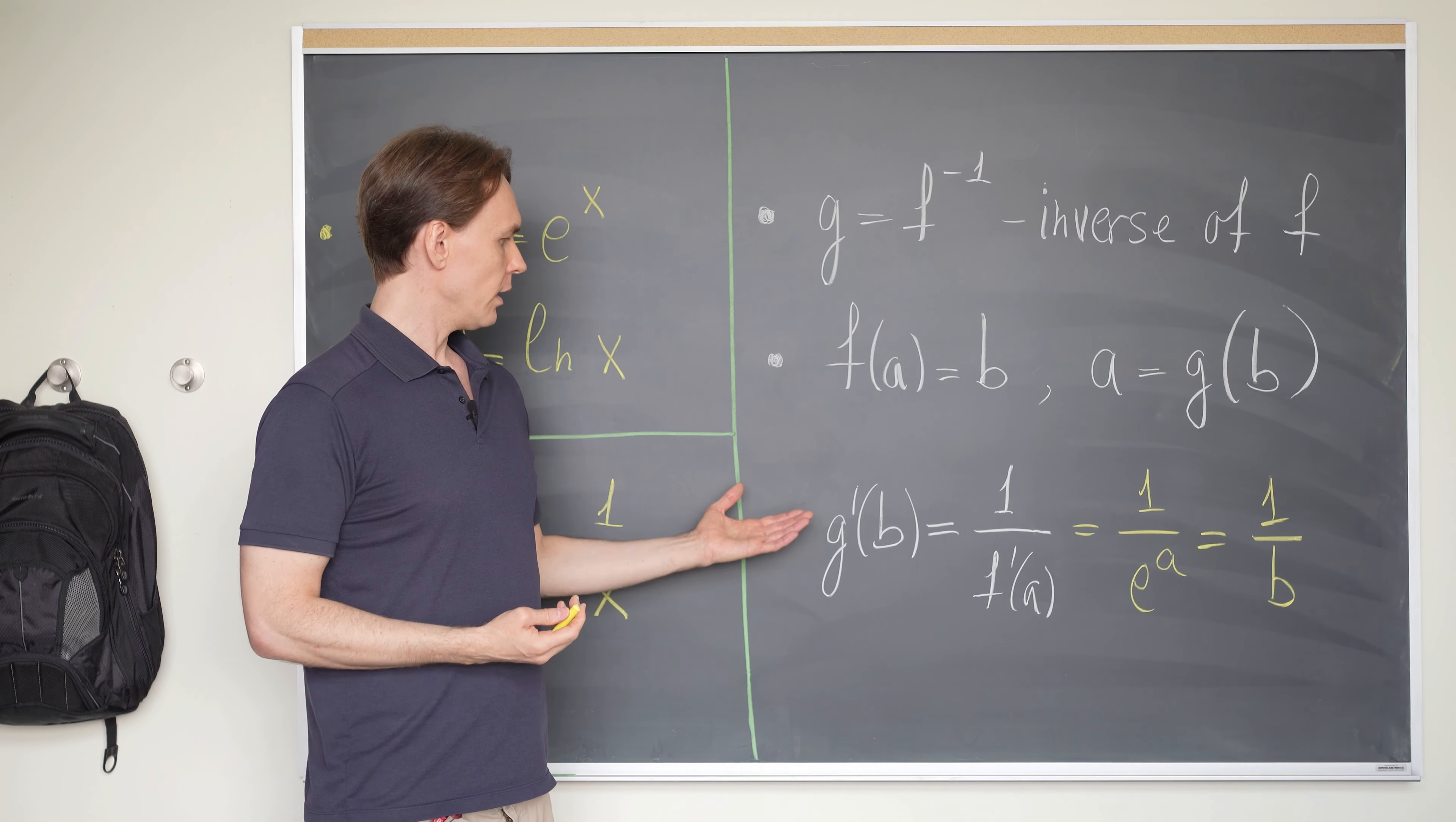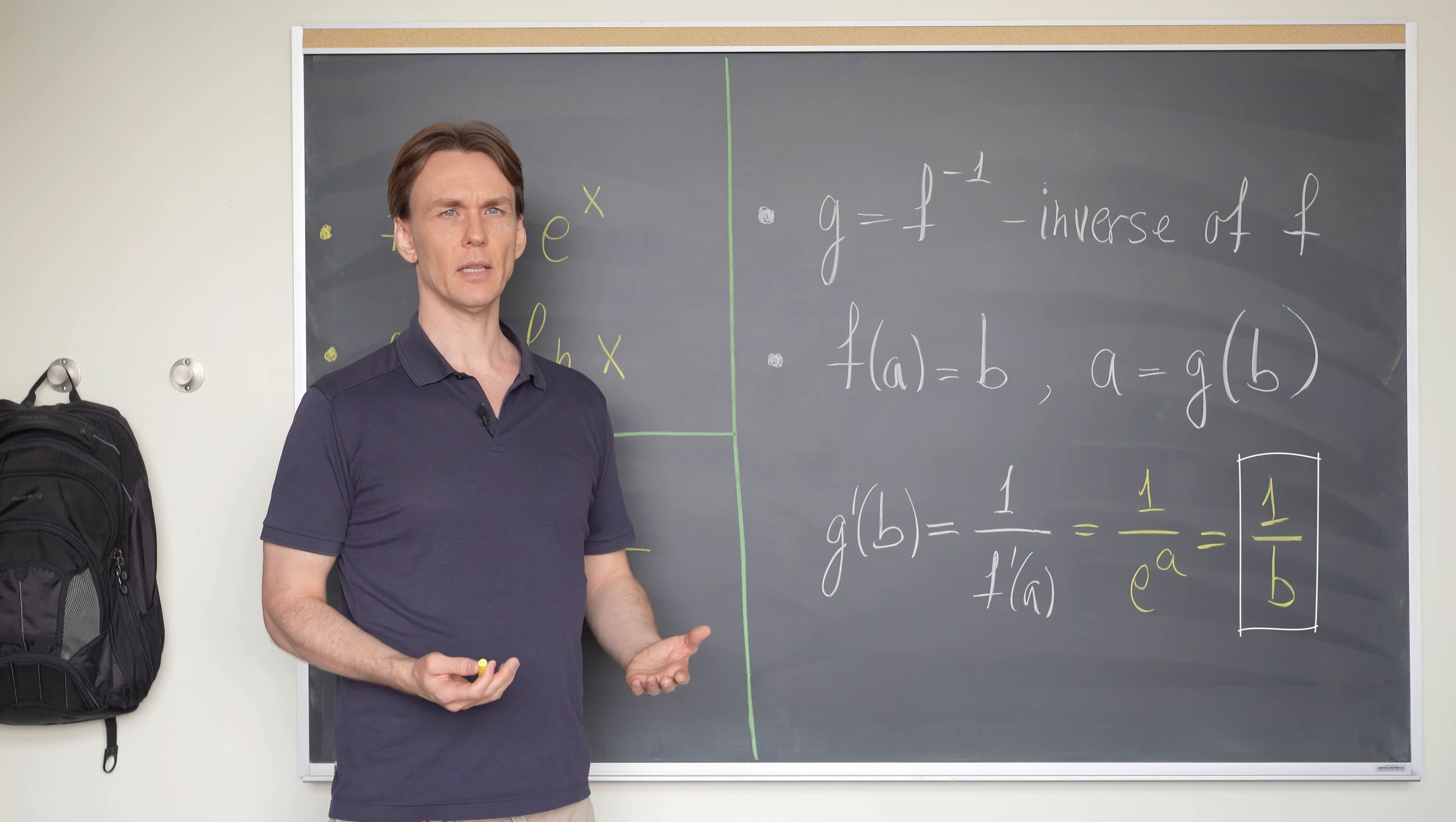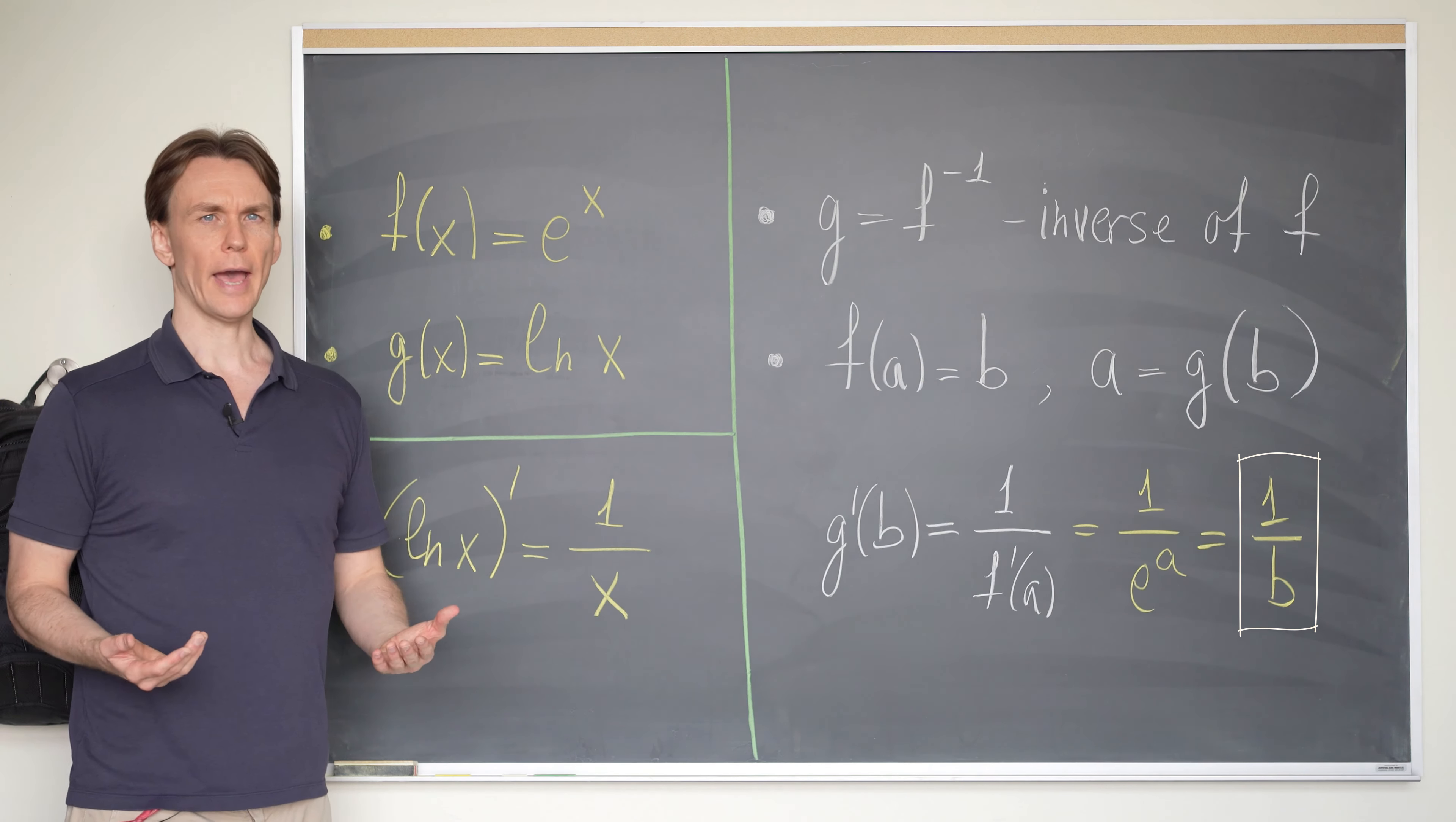This shows that the derivative of natural logarithm at some point b is equal to one divided by b. Or in other words, the derivative of ln of x is equal to one over x.